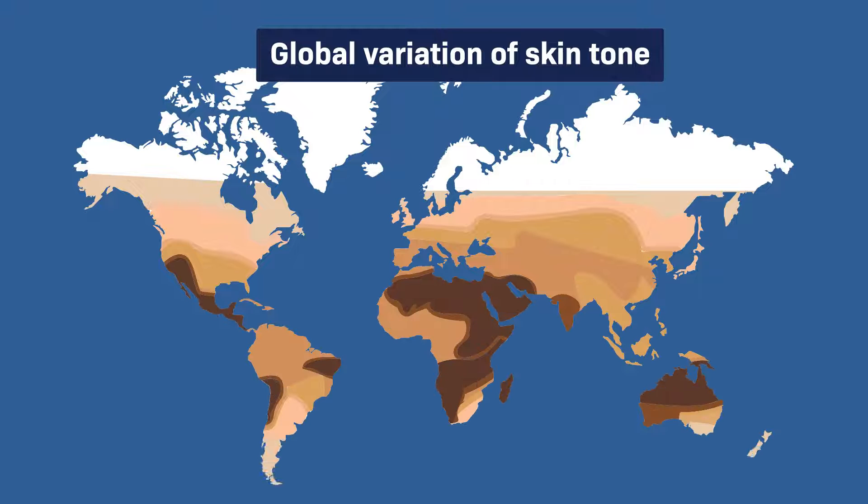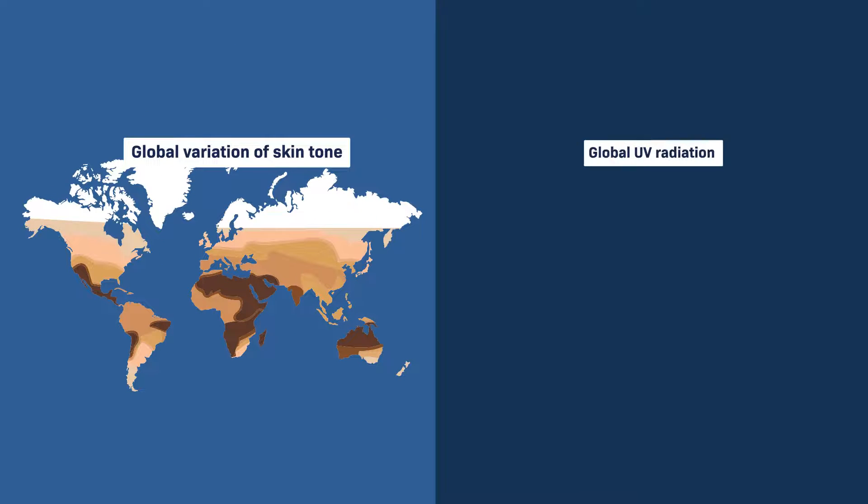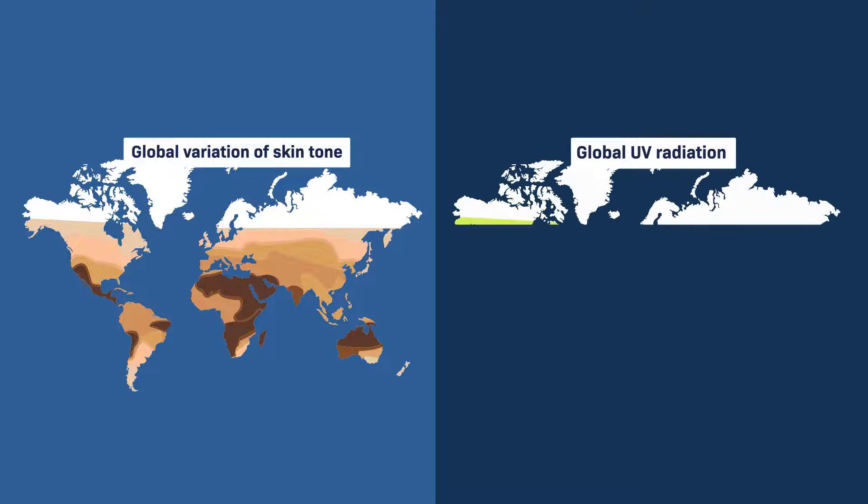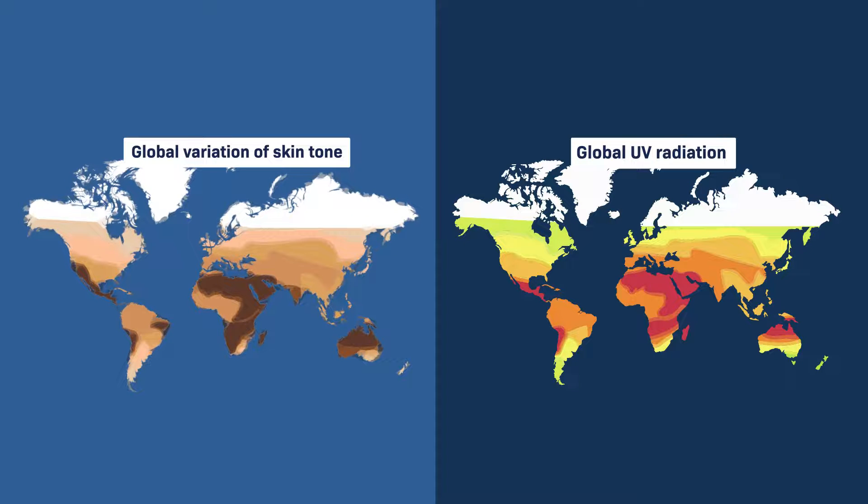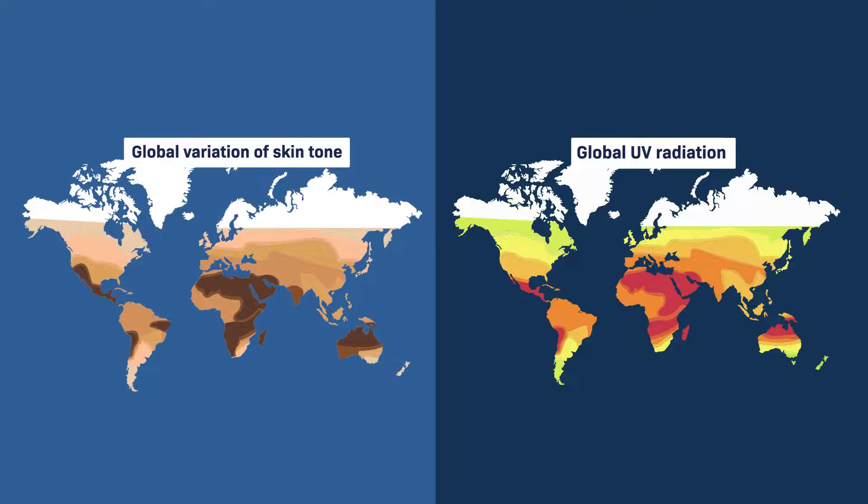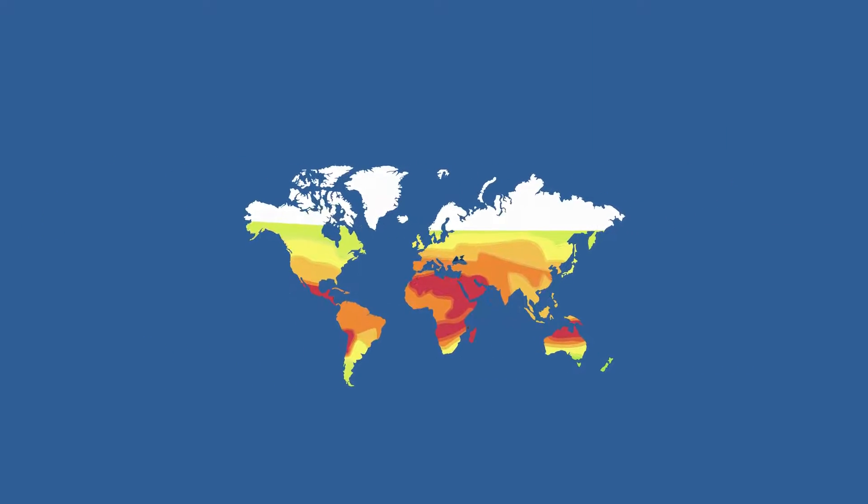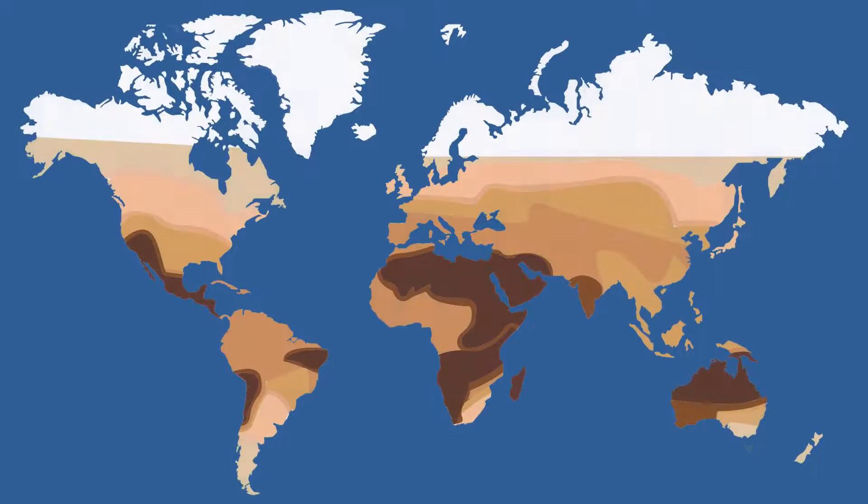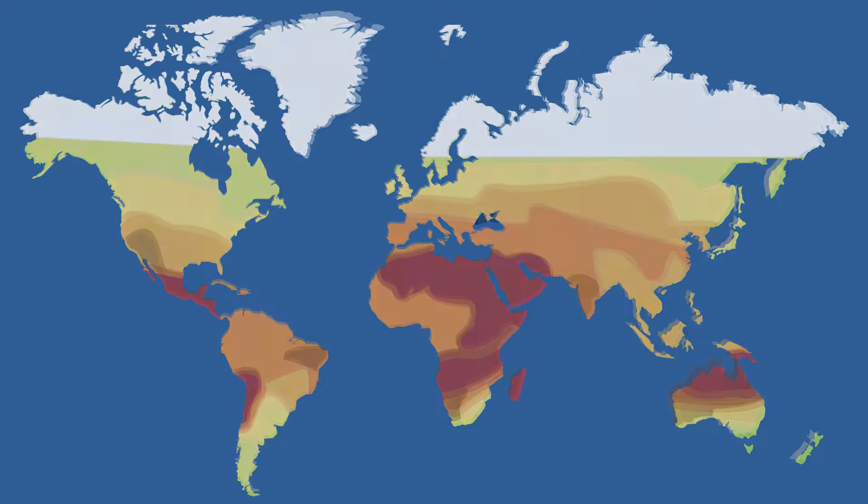Over thousands of years, humans in different geographic regions have developed different skin tones to maintain a balance of folate and vitamin D levels. This allows us to protect ourselves from the UV rays of the sun while still creating the nutrients we need. As a result, today we see that people's skin tones are generally darker in areas closest to the equator where UV rays are strongest, and generally lighter in areas further away from the equator.